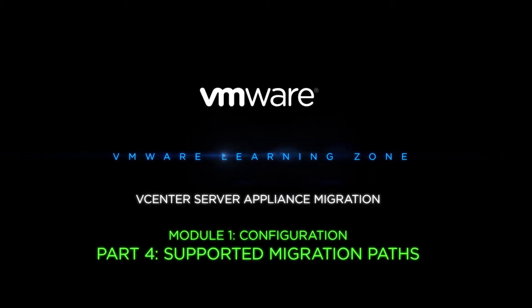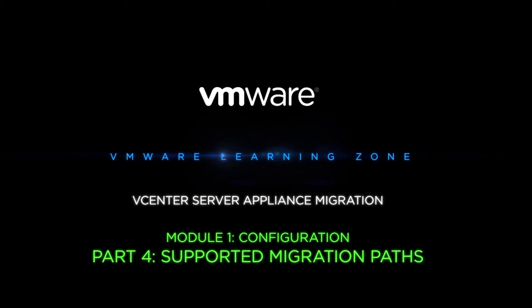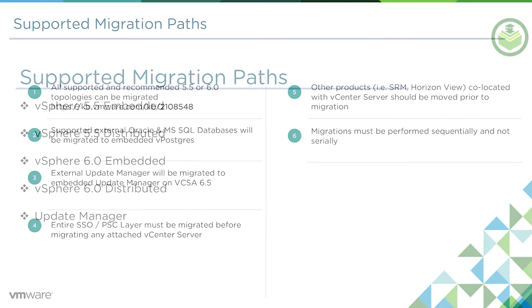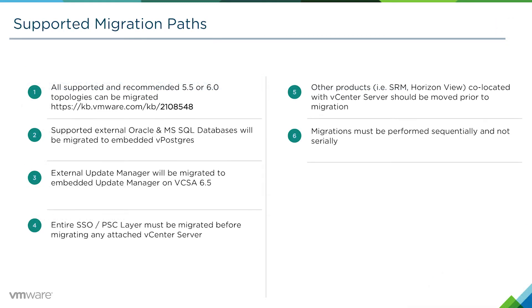In this video, we're going to talk about the supported migration paths to go from a Windows vCenter Server 5.5 or 6.0 to a vCenter Server Appliance 6.5. We'll also talk about Update Manager, because there's an extra bit of configuration needed if Update Manager is external. First, we'll cover a couple of requirements involved in supported migration paths.